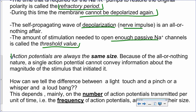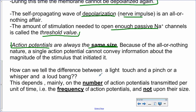Action potentials are always the same size. Because of the all-or-nothing nature, a single action potential does not convey information about the magnitude of the stimulus. How we distinguish between light touch and a pinch, or a whisper and a loud bang, depends mainly on the frequency of action potentials — the number transmitted per unit of time — not their size.